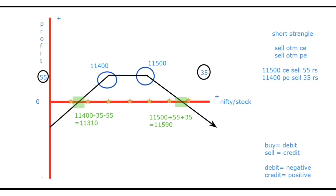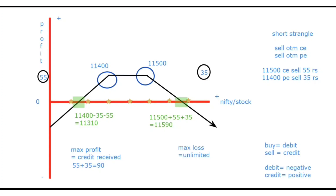And now we have done the payoff graph — apan kya karenge? Maximum profit, maximum loss, aur break even banayenge. Maximum profit kya hoga? Credit received — 55 rupees call se aayi hai, 35 rupees put se aayi hai, 55 plus 35 = 90 rupees. So the maximum profit in this strategy is 90 rupees. Ab maximum loss — payoff graph se batao kitna hoga? Yeh pura neeche ja raha hai, kuch flat line nahi hai. So the maximum loss in this strategy is unlimited.